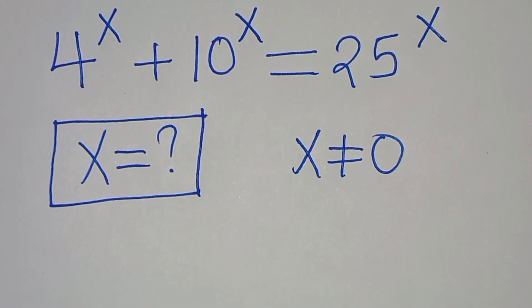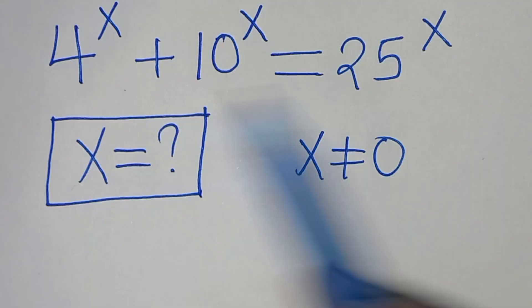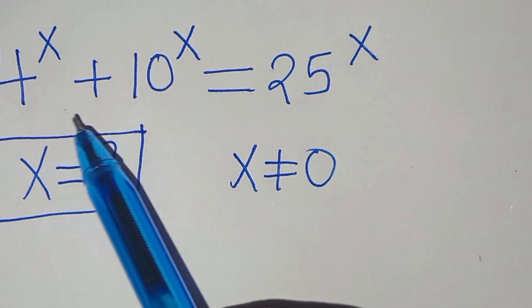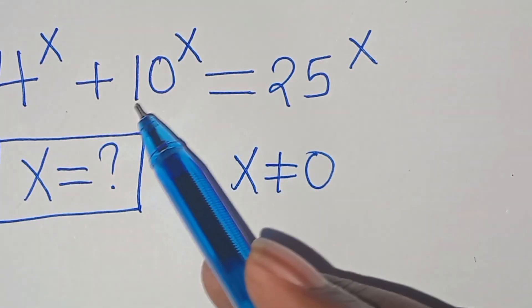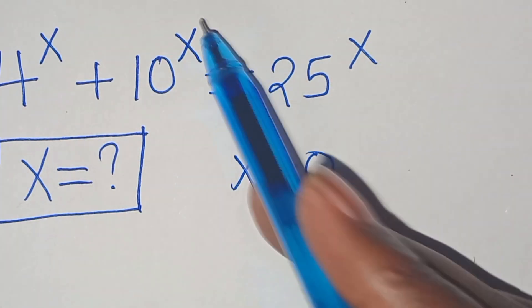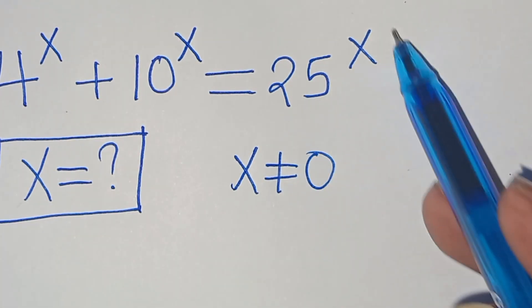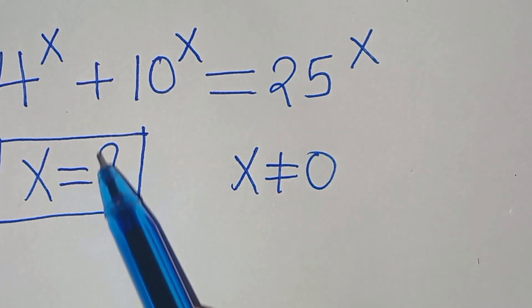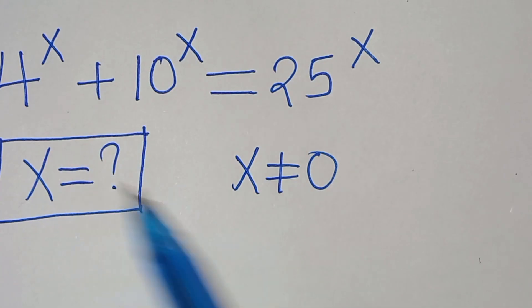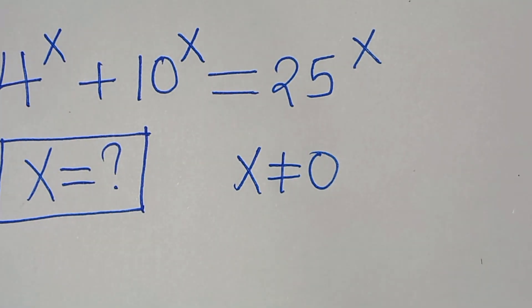Hello everyone, welcome to solve this nice algebra problem, which is 4 to the power of x plus 10 to the power of x equals 25 to the power of x. What is the value of x, given that x is not equal to 0?